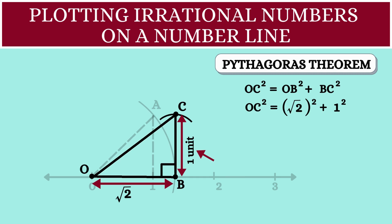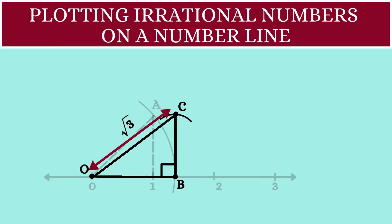So, we have OC square is equal to square root of 2 the whole square plus 1 square. This becomes 2 plus 1 which is 3. Since OC square is 3, OC will be square root of 3, which means that the length of this hypotenuse is square root of 3 units.